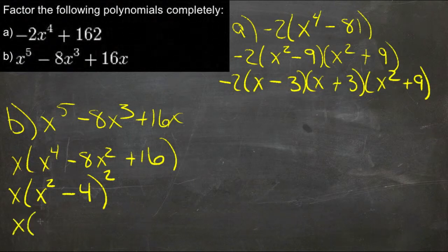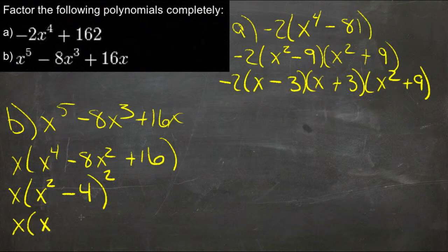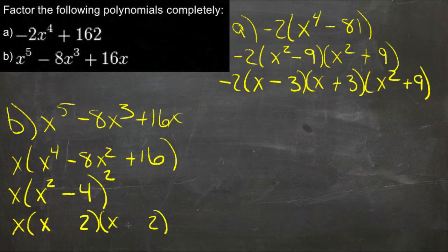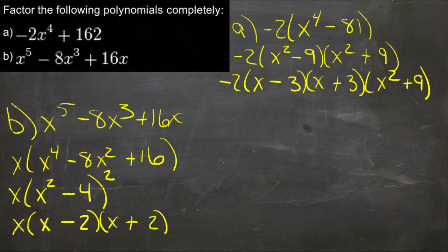and we get square root of the first term, and square root of the second term, write it twice, plus in between one, minus in between the other, and we had this whole thing squared, so we really have that whole deal twice.